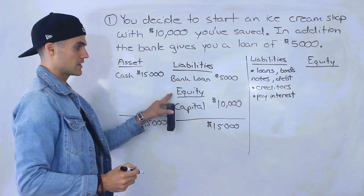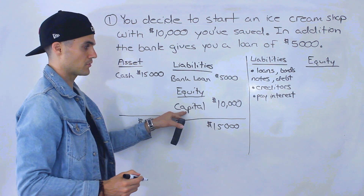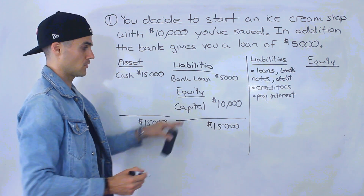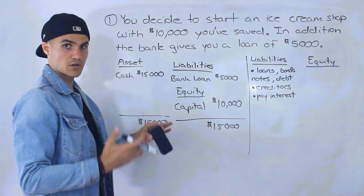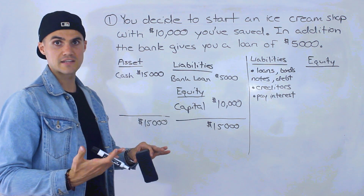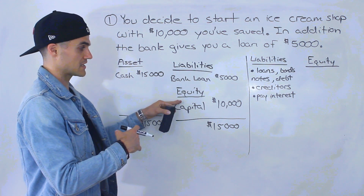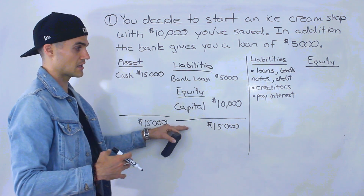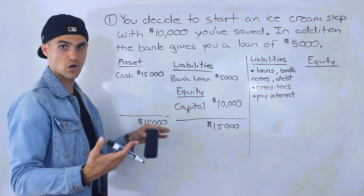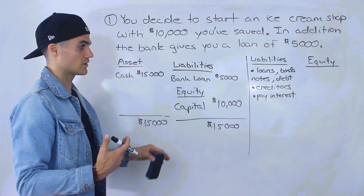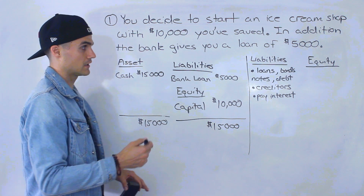Versus equity — you don't have to pay these people interest. In this case, it's your own money. But sometimes there may be multiple people invested in a business. Let's say you and your friends started this ice cream shop and you put up $10,000 and they put up $10,000. You guys aren't going to be charging each other interest — you're just both investors in the company.